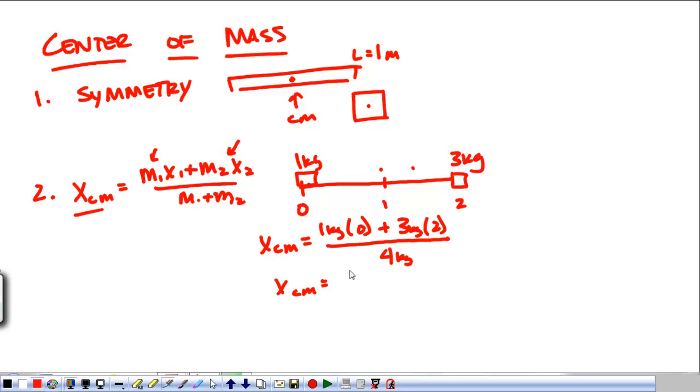So my x center of mass is 3 kilograms times 2 meters over 4 kilograms. Kilograms cross out, and I get 0.75—oh sorry, 3 times 2—1.5 meters. That's right here. That's the center of mass. That would be the balance point for that system, and I've reduced that system to its center.